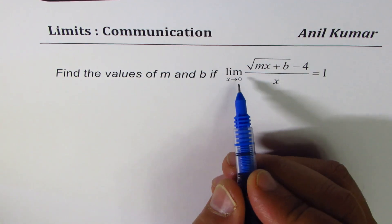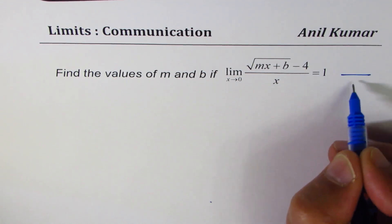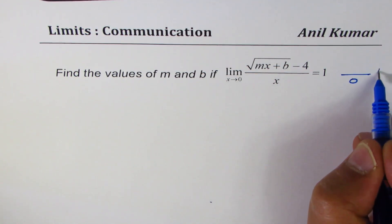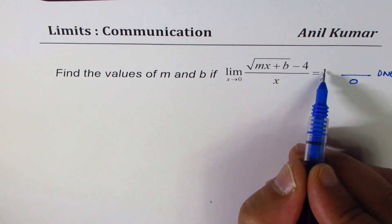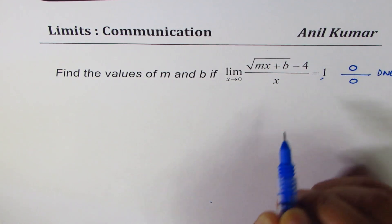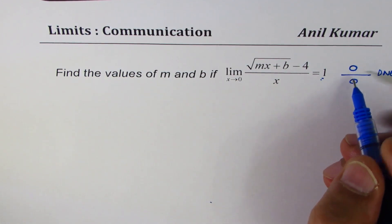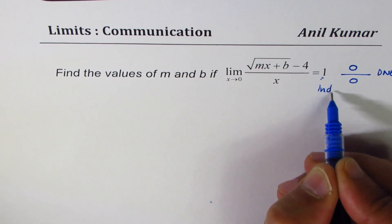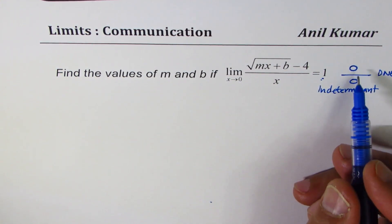When I substitute x equals 0, I get 0 in the denominator. If 0 is in the denominator, the limit does not exist. But in our case the limit exists — it is 1 — which means for x equals 0, the numerator should also be 0. That is very important to understand.